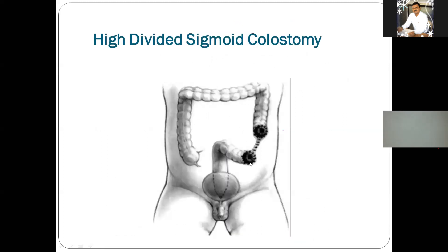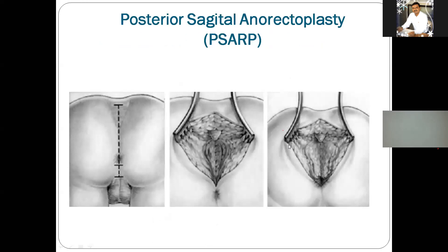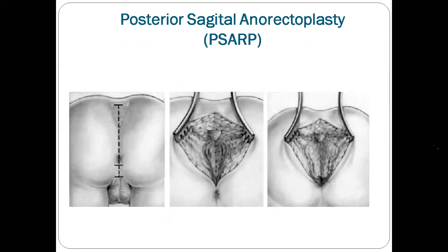This picture shows the stoma commonly used in anorectal malformation — the divided sigmoid colostomy with two portions: one functioning stoma and one mucous fistula. This saves the life, and after three months we advise the proper definitive repair. The definitive repair is posterior sagittal anorectoplasty, in which a midline deep dissection is performed to access the rectum communicating with the urinary system, carefully separating the rectum from the other structures, and then creating the anal opening within the sphincter margins.